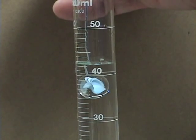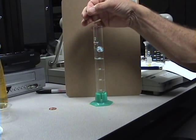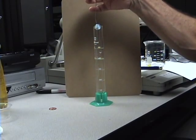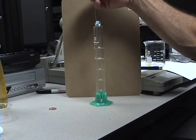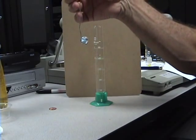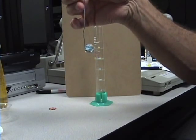And so if we take 42, subtract the 40 it started with, that gives us a volume of this marble as 2 milliliters.